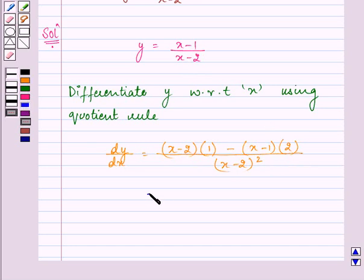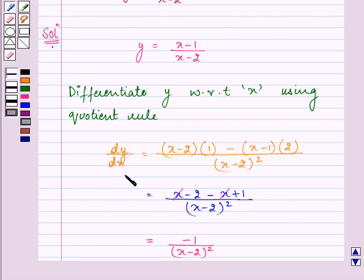On simplifying it we have x minus 2 minus x plus 1 upon x minus 2 the whole square. Further, we have minus 1 upon x minus 2 the whole square as dy by dx.